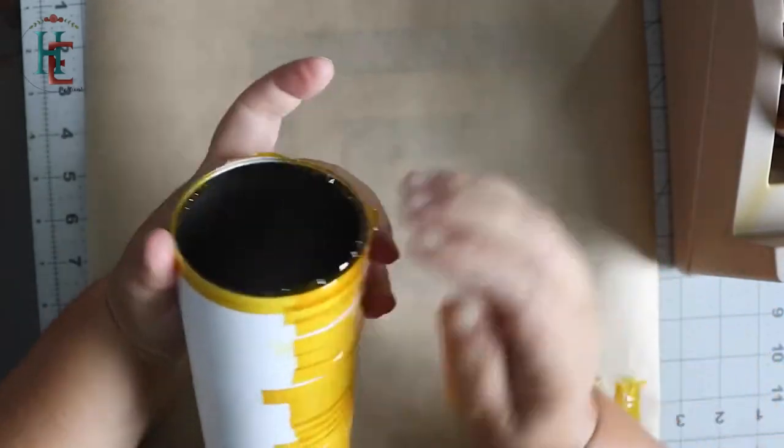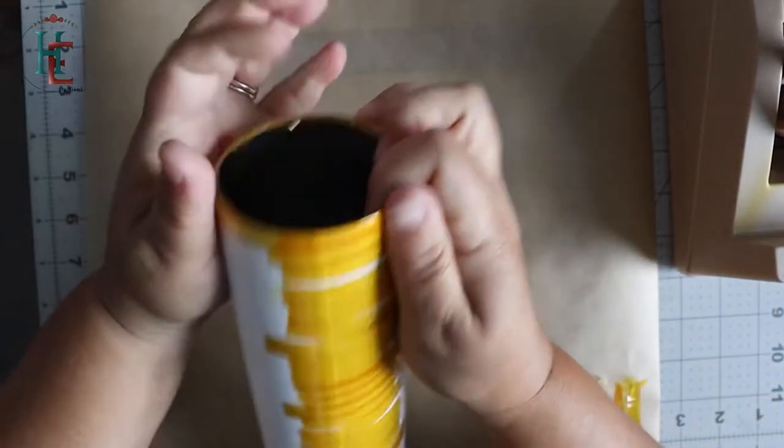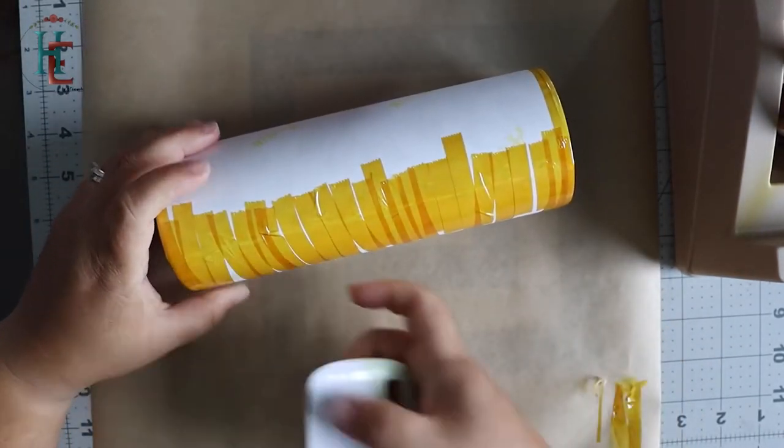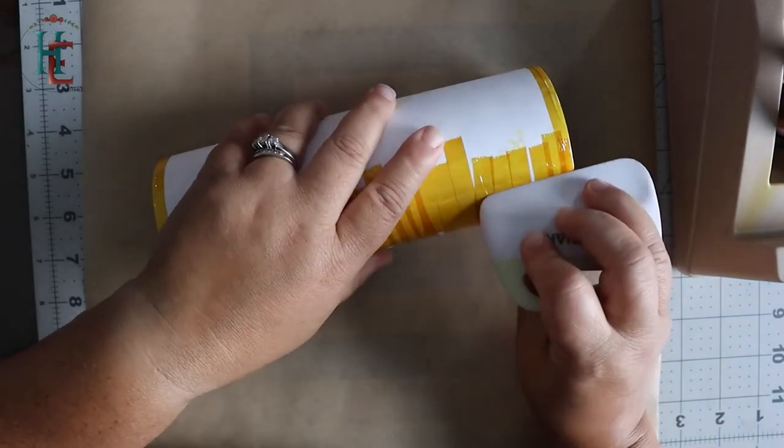Pull very tight, as hard as you can. Now what I'm going to do is use my scraper from my Cricut to push out all that air that's in between my overlap.